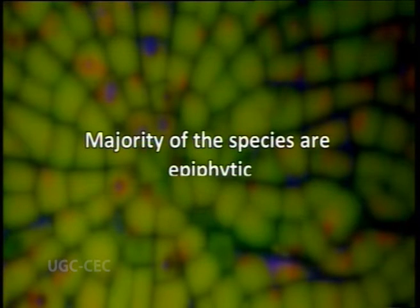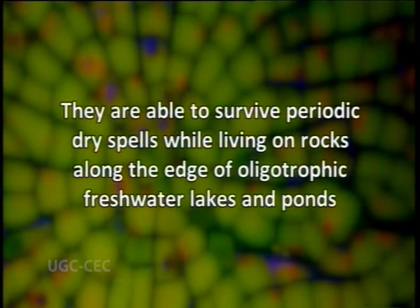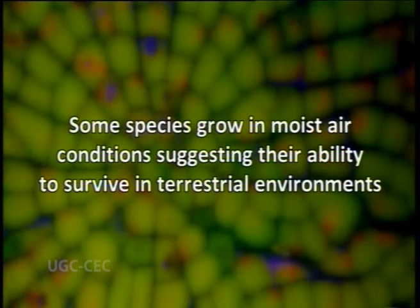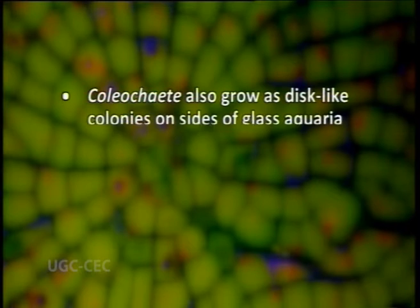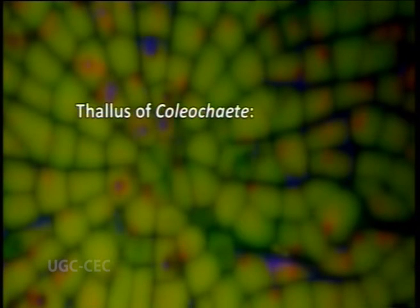The majority of species are epiphytic. They are able to survive periodic dry spells while living on rocks along the edges of oligotrophic freshwater lakes and ponds. Some species grow in moist air conditions, suggesting their ability to survive in terrestrial environments and reinforcing the evolutionary link with land plants. Coleochaete can also grow as disc-like colonies on the side of glass aquaria and is sometimes found in low pH sphagnum bogs. However, the genus has not been found in brackish or more extreme habitats.